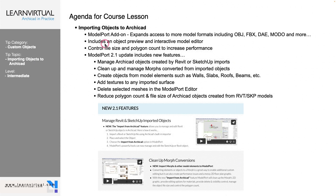The Modelport 2.1 update includes a lot of new features. It manages ARCHICAD objects created by Revit or SketchUp imports, and it cleans up and manages morphs converted from imported objects. You can create objects from modeled elements such as walls, slabs, roofs, and beams. You can add textures to any of your imported surfaces, delete selected meshes in the Modelport editor, and reduce the polygon count and file size of ARCHICAD objects created from a Revit or SketchUp model.